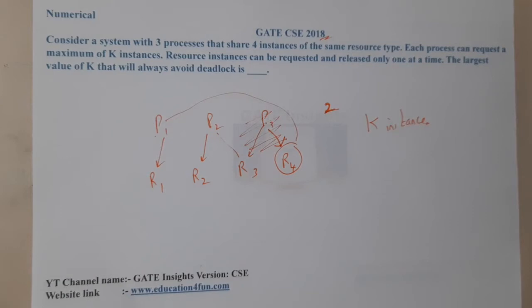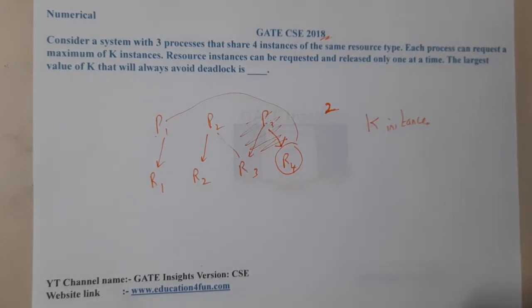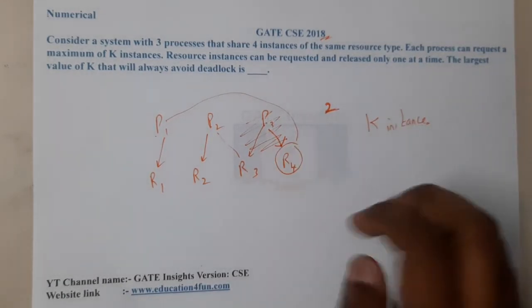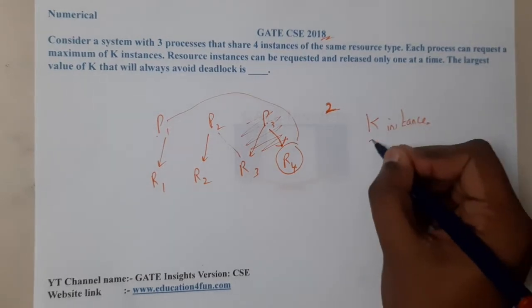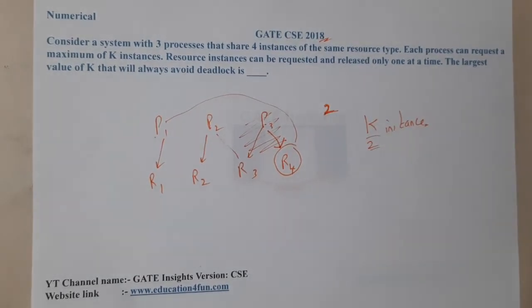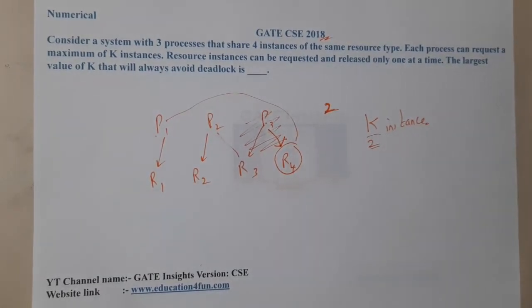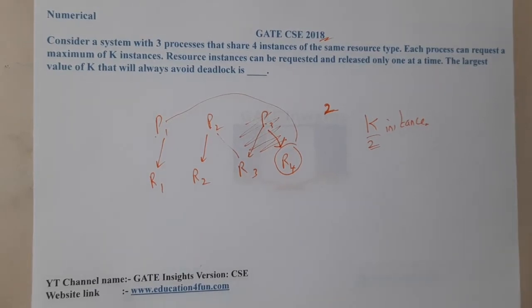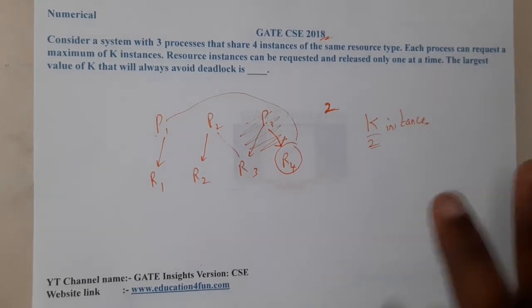Basically, if the value of k is two — meaning the number of instances requested is two — that will be a valid possibility. Let's also consider if the value of k is three.